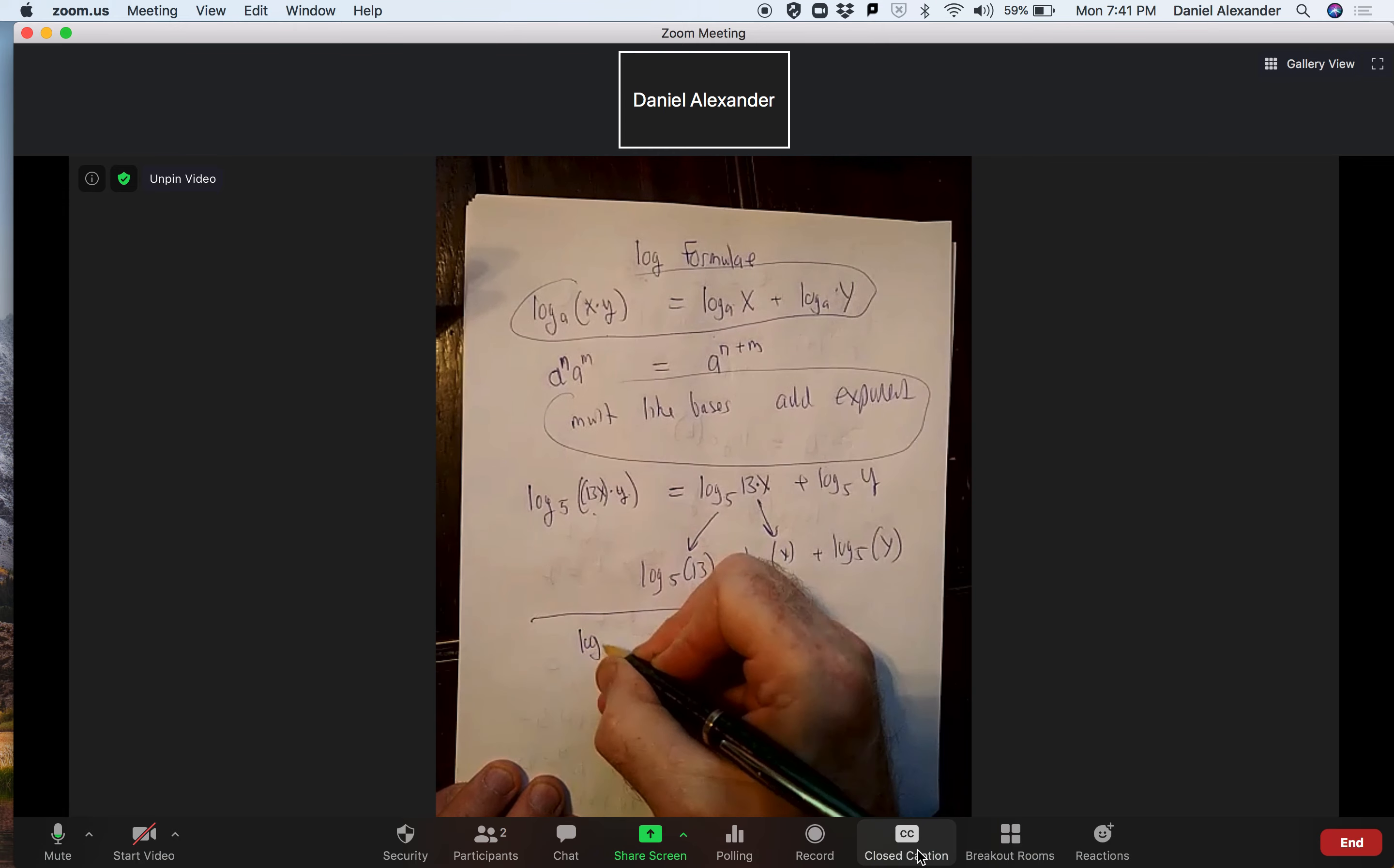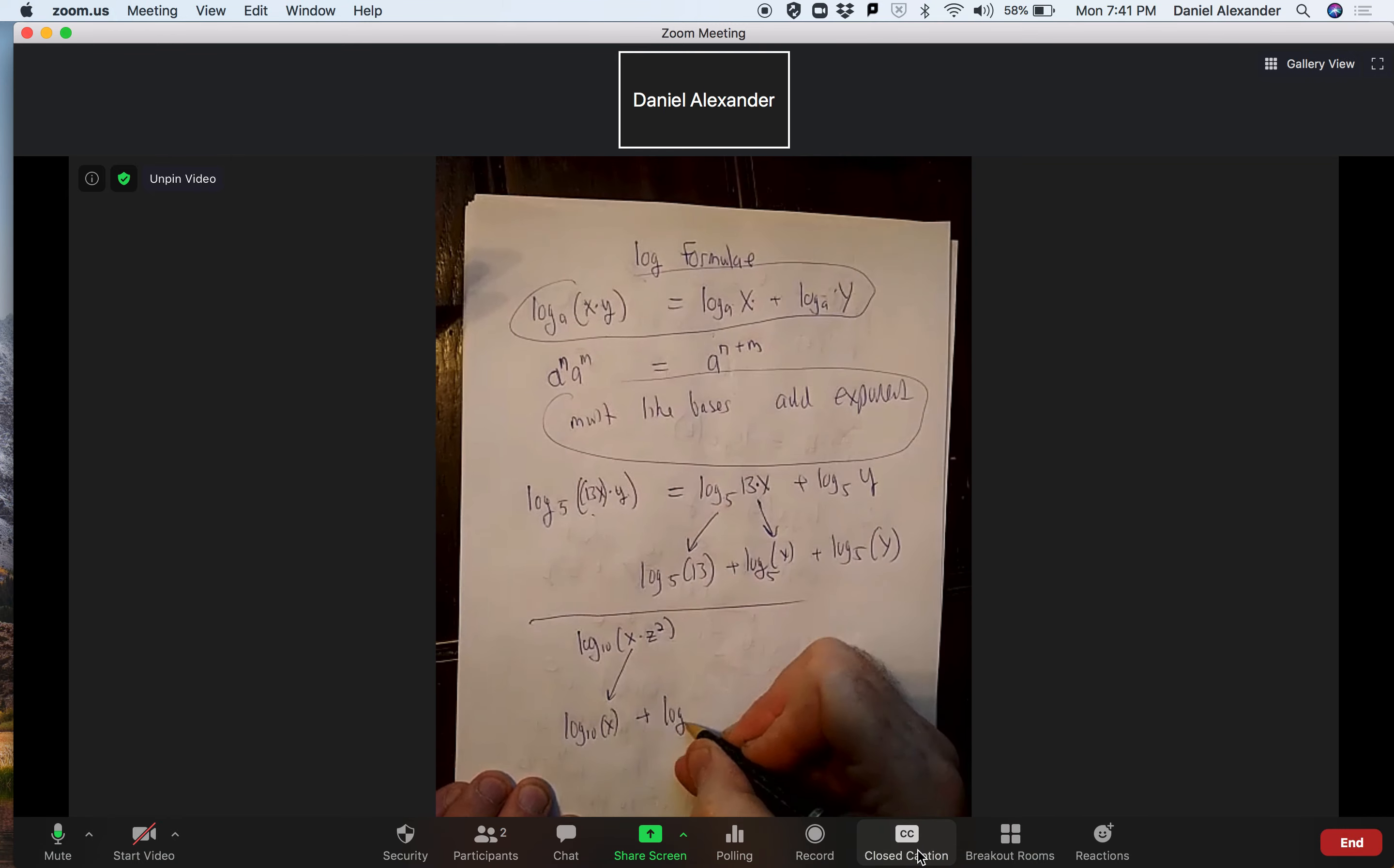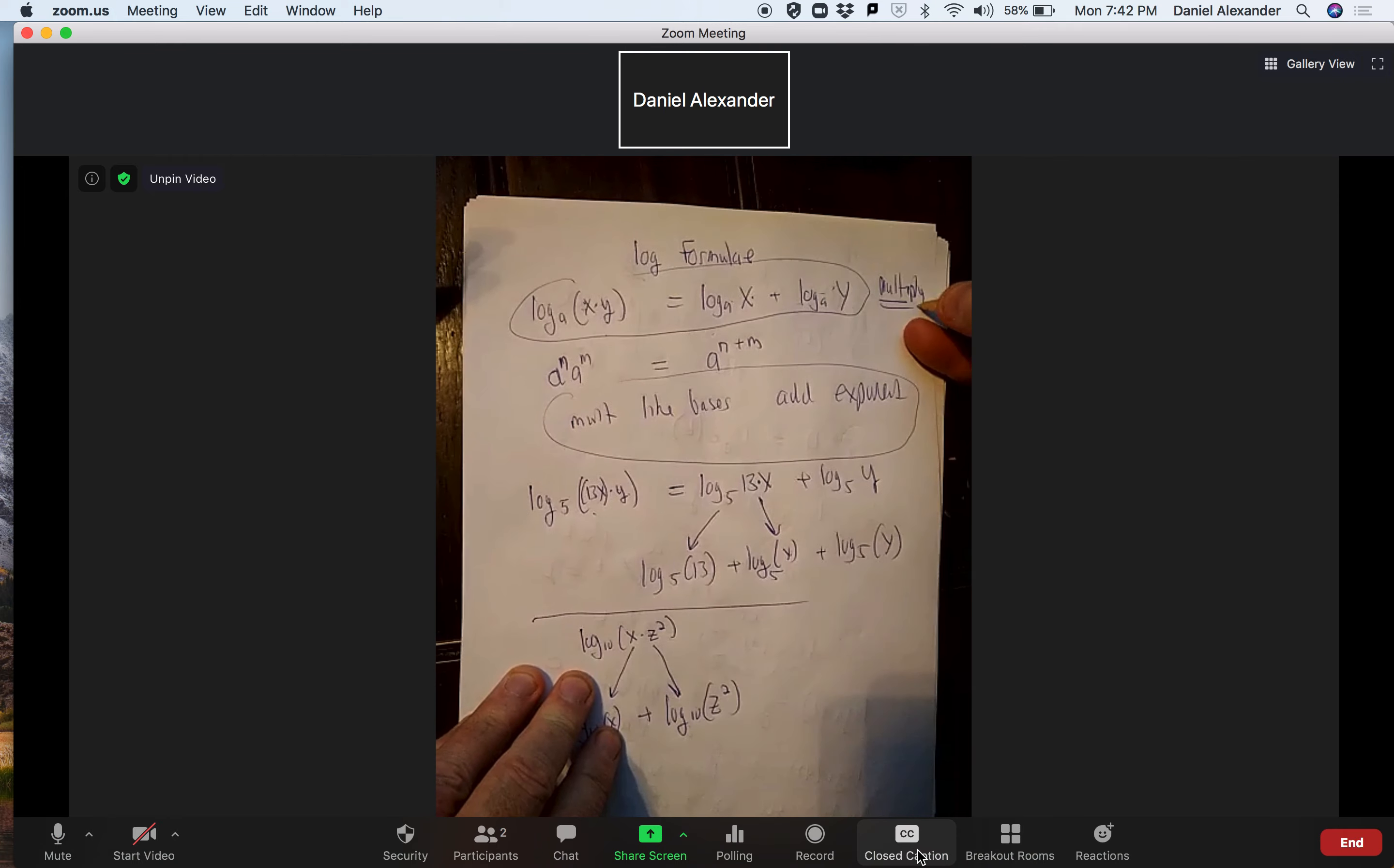Let's do another one. Let's do the log base 10 of x times z squared. Break that into the log base 10 of x plus, again I'm using that formula, log base 10 of z squared. So again, you'll be able to have some practice exercises on that. So that's the multiplication formula, so I'm just going to say multiplying.